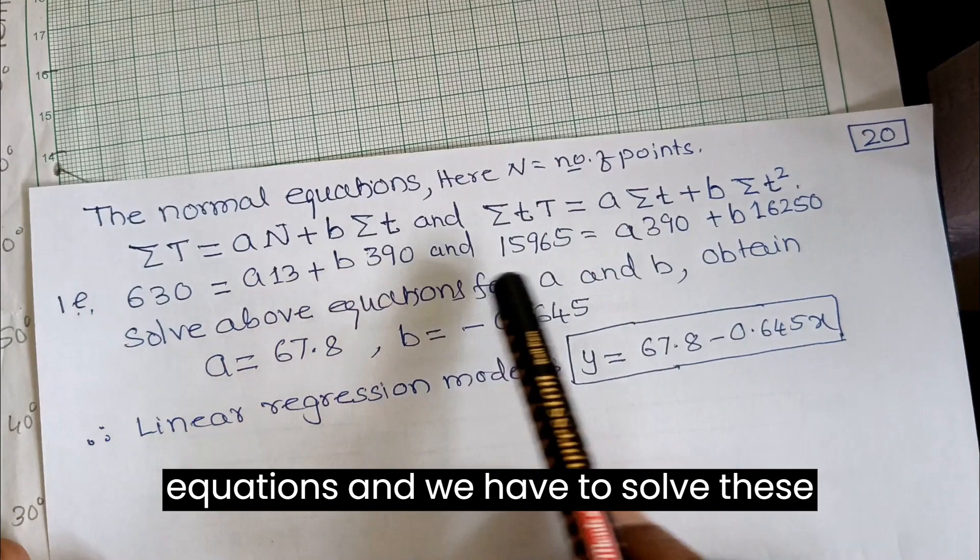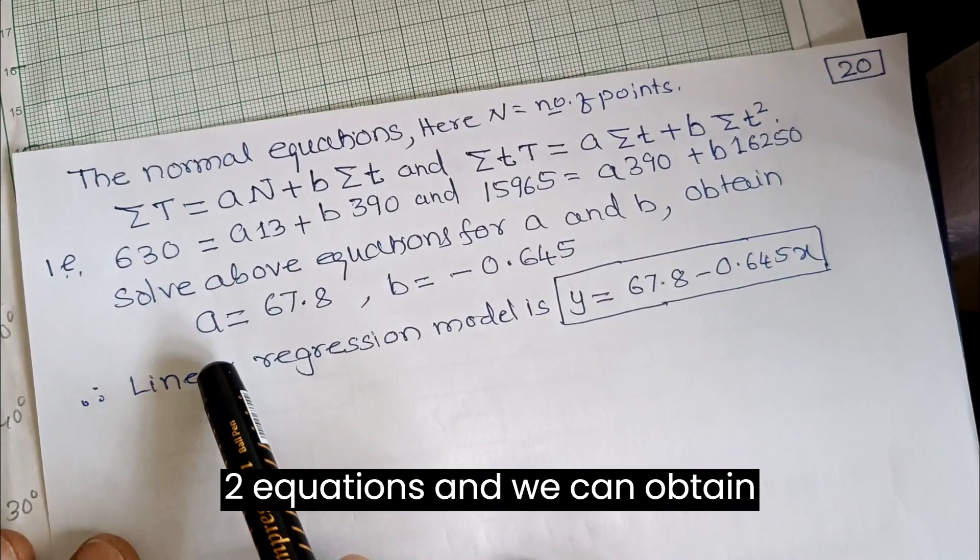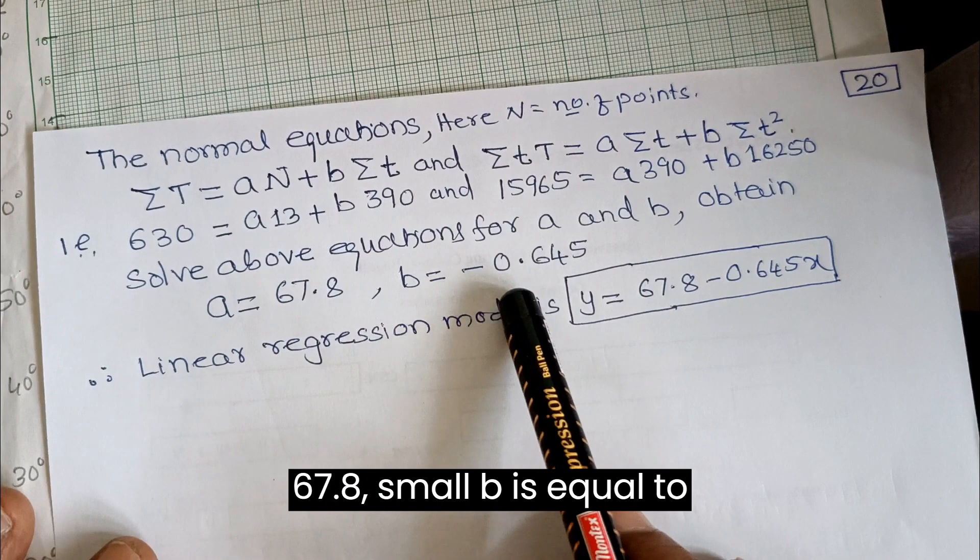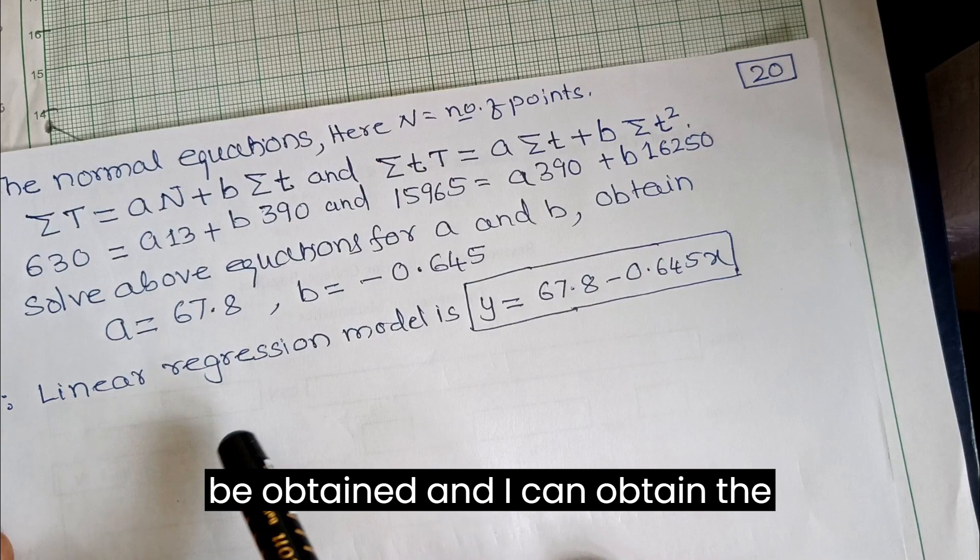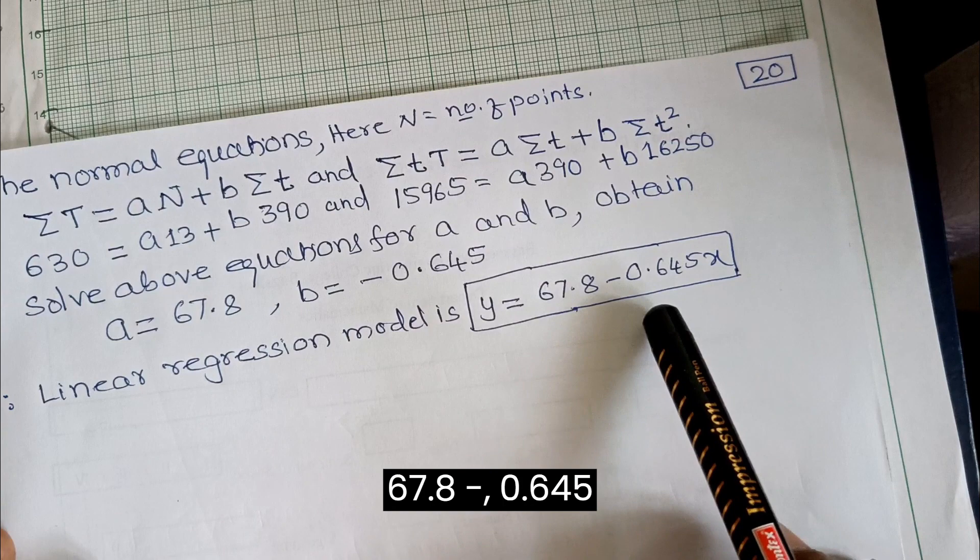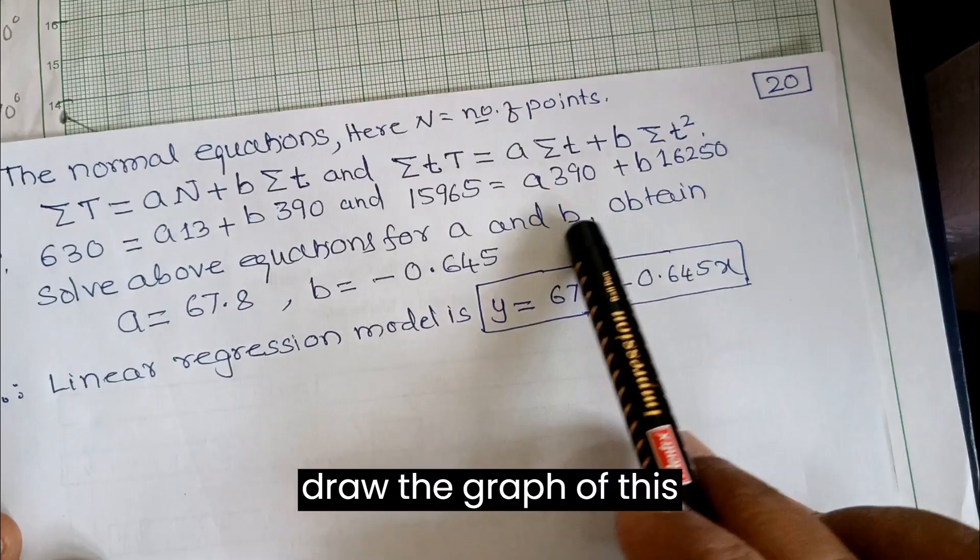Here we know all the values except small a and b. Known values can be substituted in these two equations. We solve these equations and obtain: small a equals 67.8, small b equals minus 0.645. The linear regression model is y equals 67.8 minus 0.645 times x.